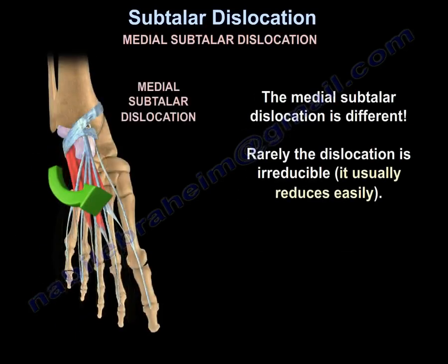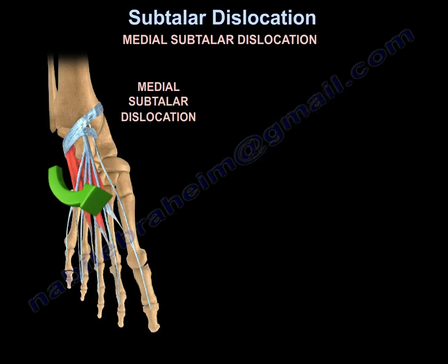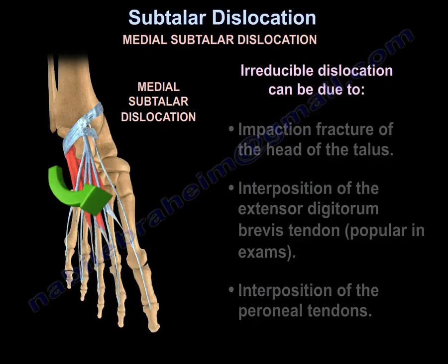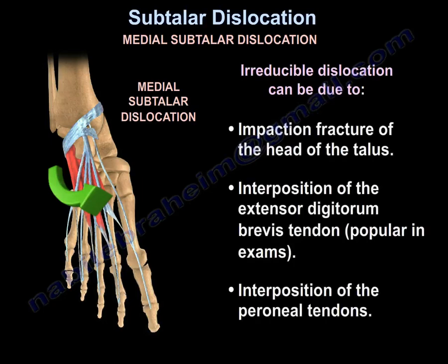The medial subtalar dislocation is different. Rarely the dislocation is irreducible — it usually reduces easily. If it becomes irreducible, that can be due to an impaction fracture of the head of the talus, interposition of the extensor digitorum brevis tendon (this is popular in exams), and interposition of the peroneal tendons.